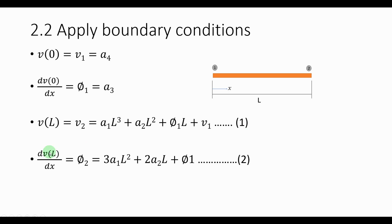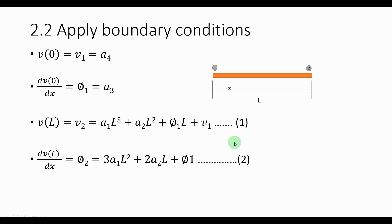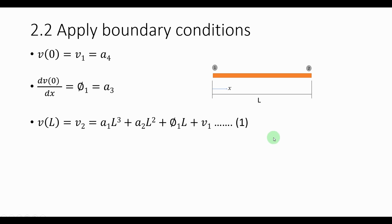Next, we take the derivative of the displacement function again, which gives us the slope at node 2, yielding another equation. As you can see, we still have coefficients a1 and a2 in both of these equations, giving us two equations and two unknowns which we can solve. I'm not going to show how to solve it here, but please follow along to the next slide.